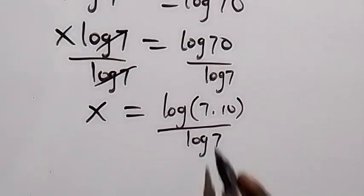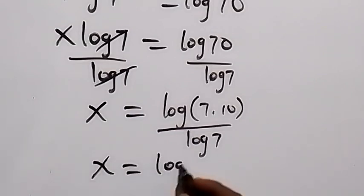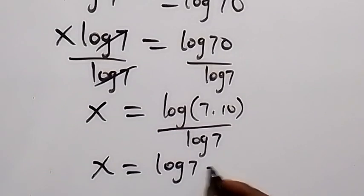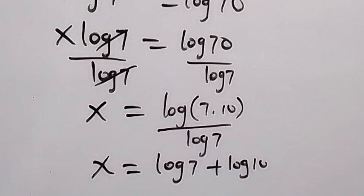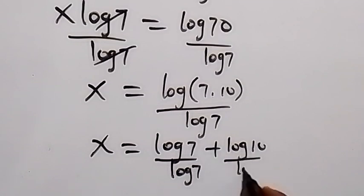Where we have product, we separate it to the sum of two logs. And this can be written as x equals to log 7 plus log 10, all divided by log 7. And from here log 7 cancel log 7, that's 1.